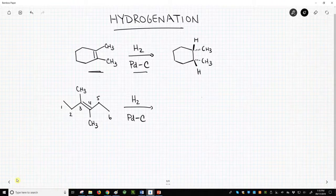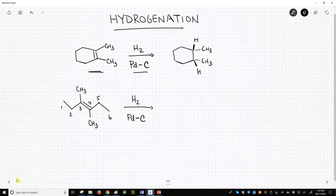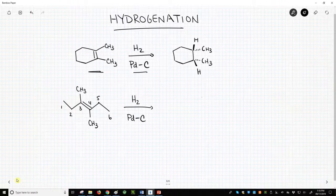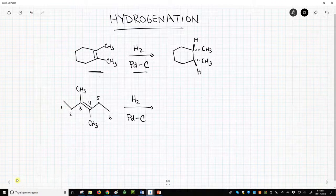Let's look at the second reaction, this time with an acyclic alkene. The reagents are the same – H2 with palladium. For the syn addition, we'll add both hydrogens to the same face of the pi bond. I'm going to arbitrarily say we'll add the hydrogens to the top face.